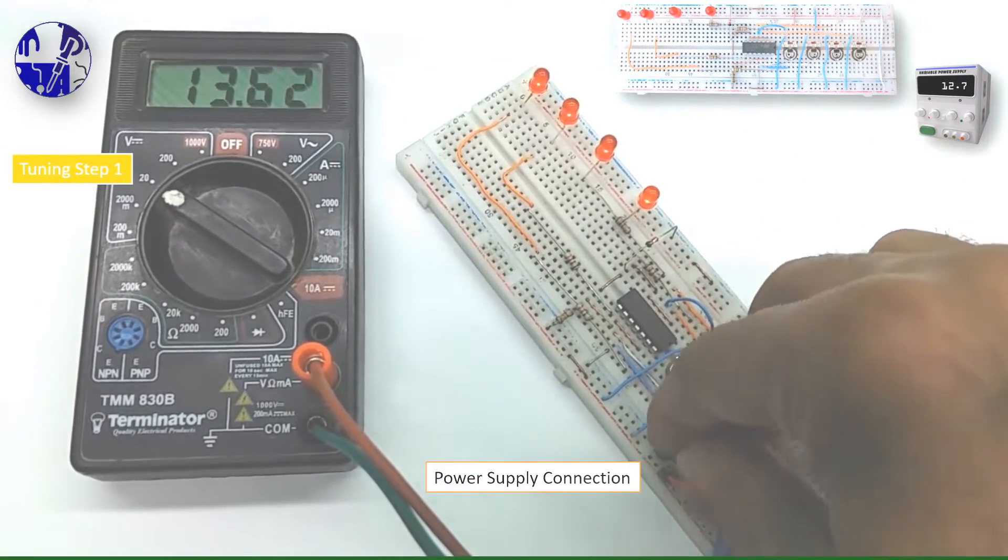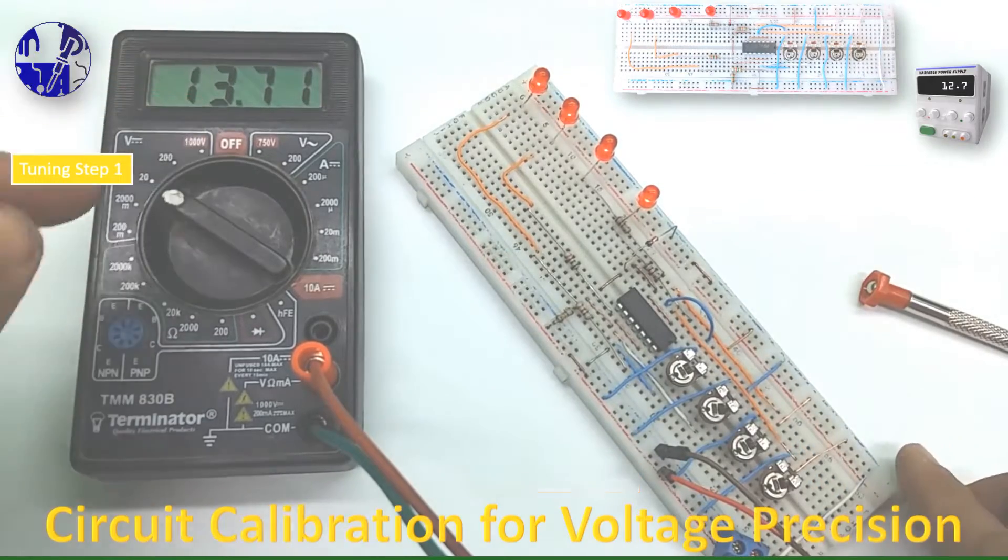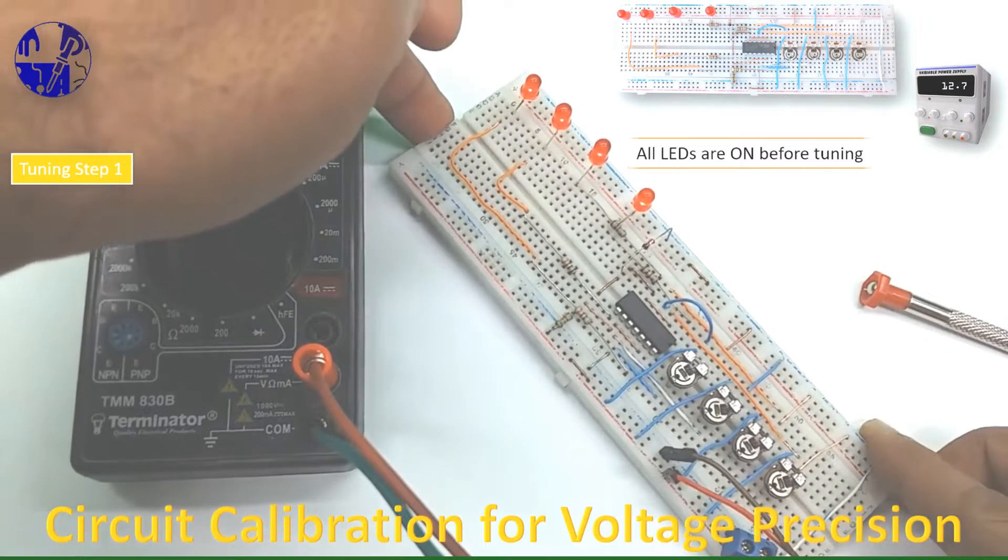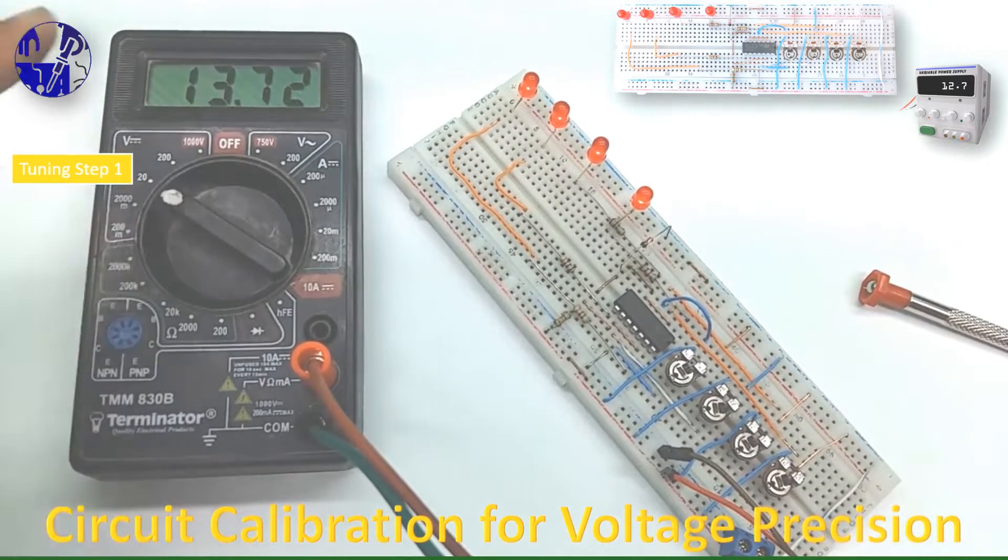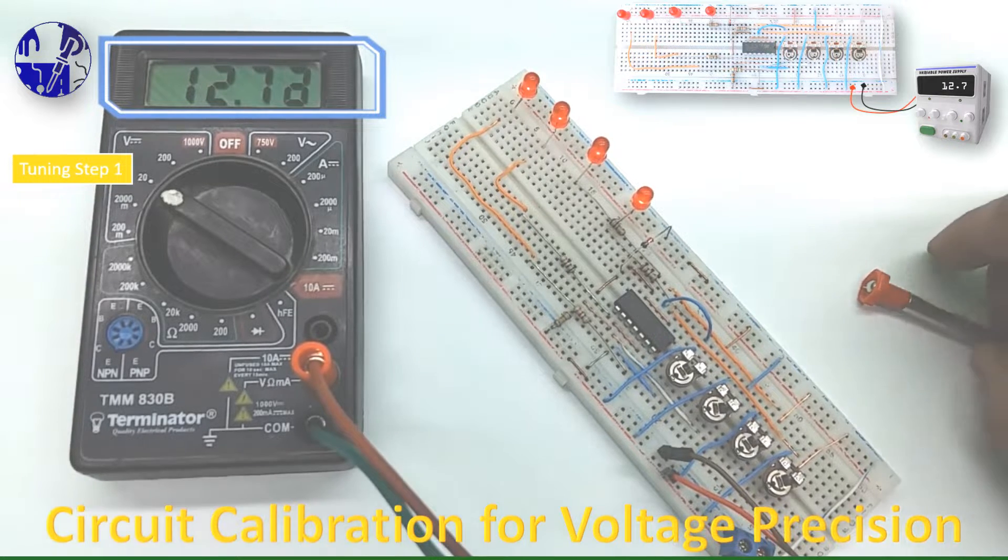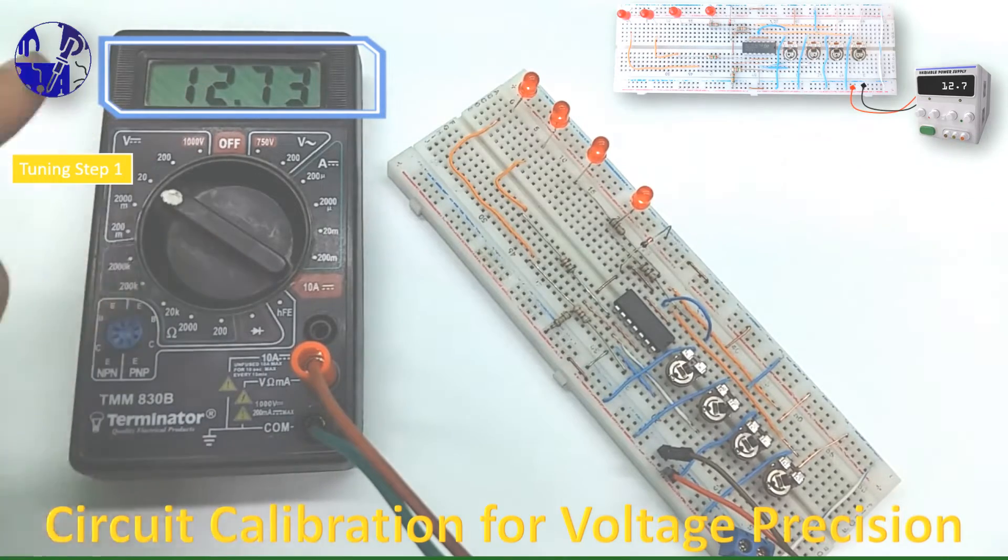Now it is time to calibrate the circuit after installing all components on the breadboard, ensuring each LED accurately indicates the battery voltage level. Connect a variable power supply to the circuit and set 12.7 volt, because a 12 volt battery shows 12.7 volt in a digital multimeter when fully charged.